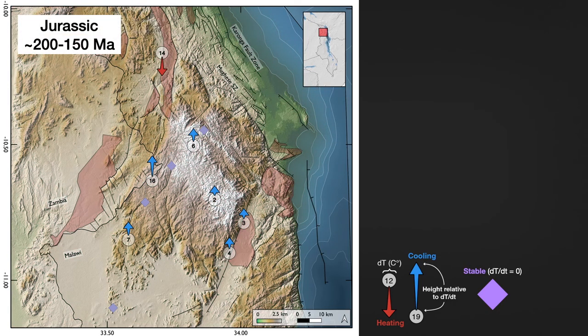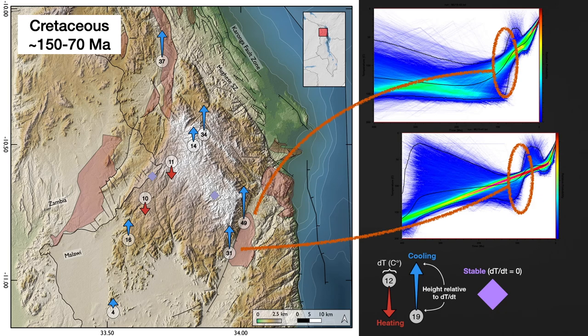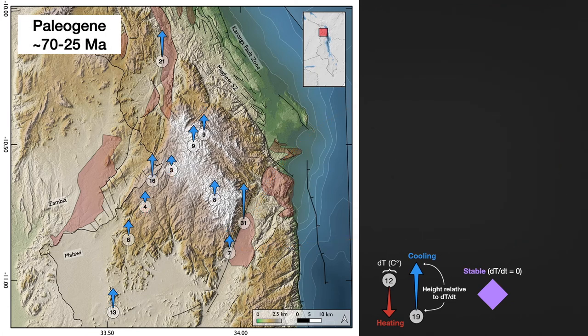Continuing on to the Jurassic, things are relatively stable. In the Cretaceous, the two samples along the footwall to the southeast are better constrained at this time and prefer a cooling, which could be due to removal of the Karoo cover in that area. Similarly, the northern sample adjacent to the Karoo deposition also prefers cooling at this time to a similar degree. The Paleocene is relatively stable, with some areas showing moderate cooling.